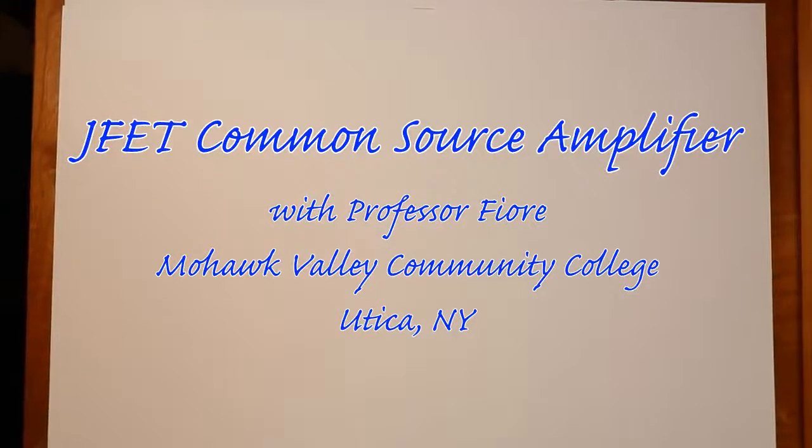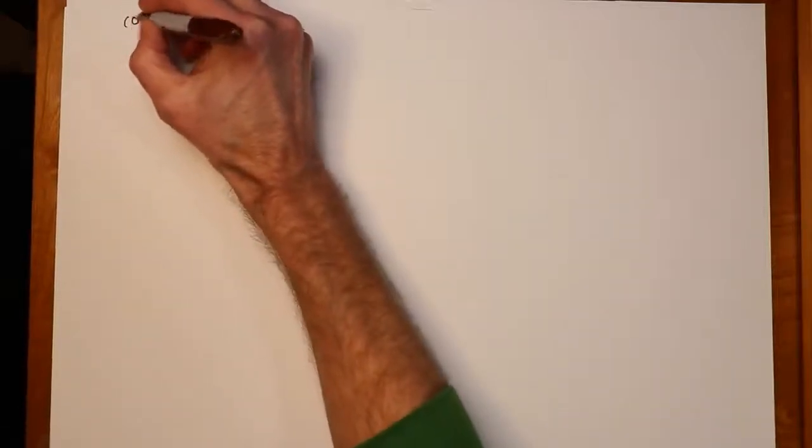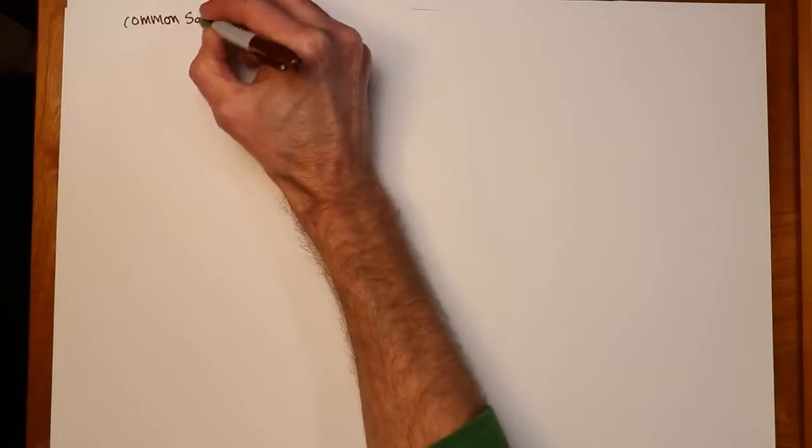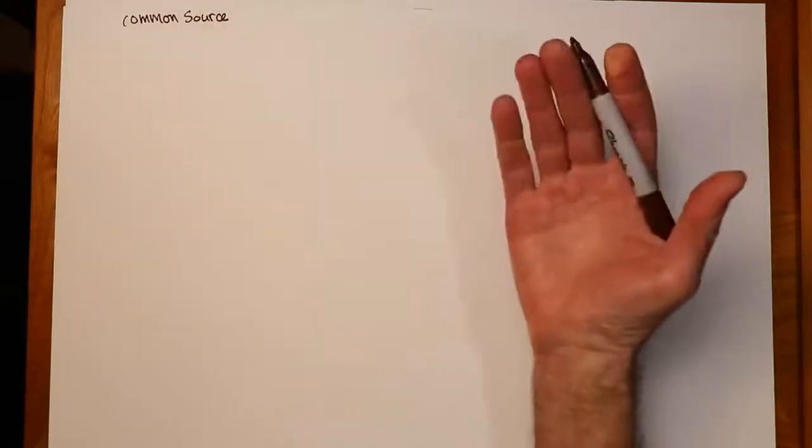Greetings, me droogs. Today we're going to look at common source FET amplifiers. Very similar in function to a common emitter bipolar amplifier. You're going to see a lot of similarities here. So let's start with a little circuit. This is our common source amplifier. Like the bipolar case, this is an inverting amplifier. We get voltage gain out of it.